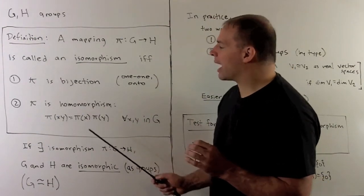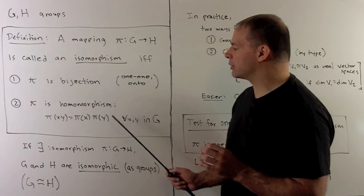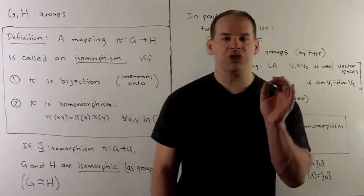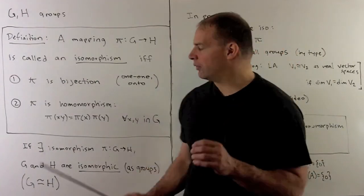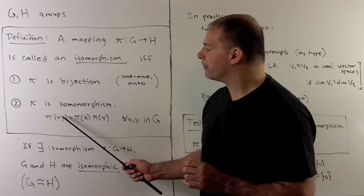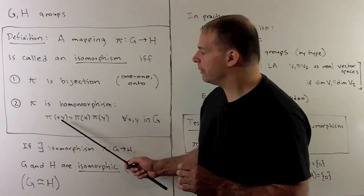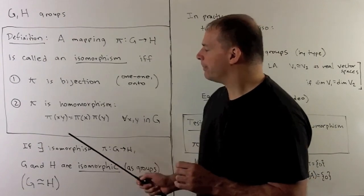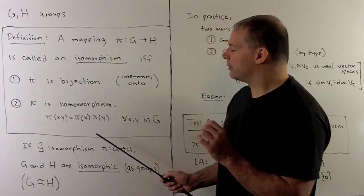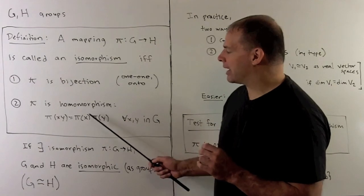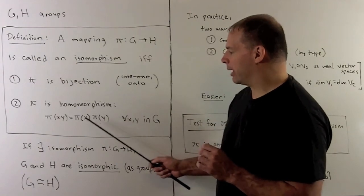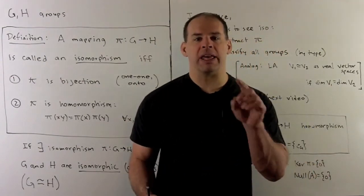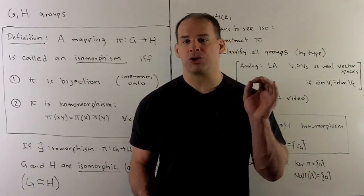The homomorphism condition is: pi of xy equals pi of x times pi of y, for all x, y in G. This just says if we multiply in G and apply pi, we get the same answer as if we apply pi to x and y and then multiply. So the multiplication factors through pi.